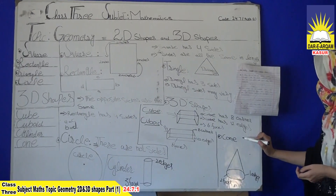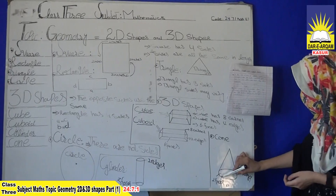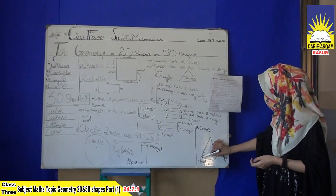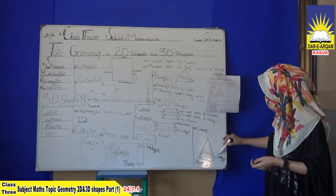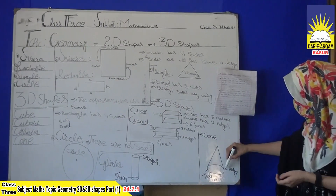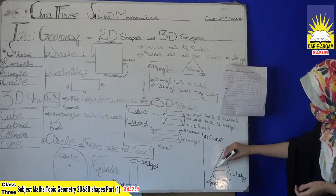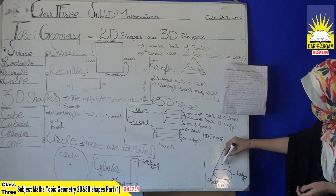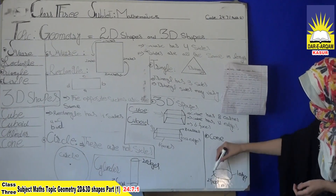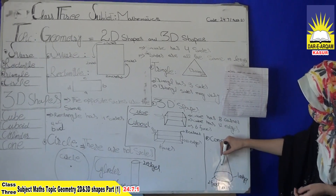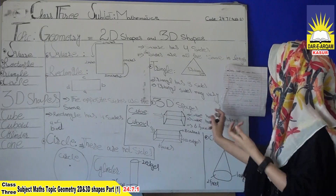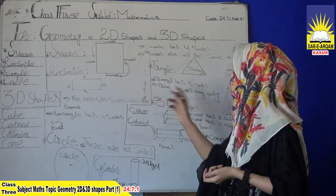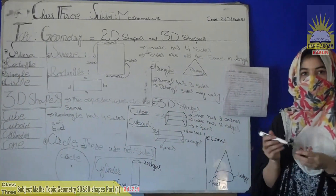Next we have a cone. A cone has 2 faces and 1 edge. This is the 1 edge and 2 faces: 1 and 2. This is called 3D shapes. Thank you.